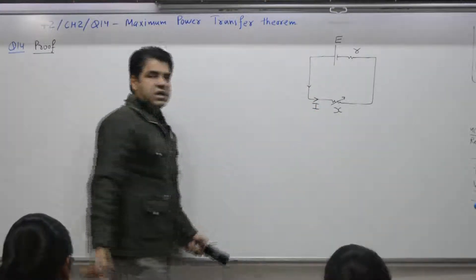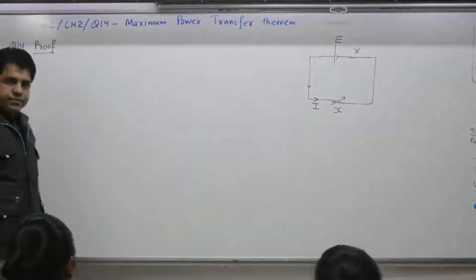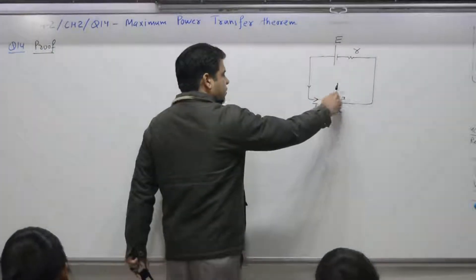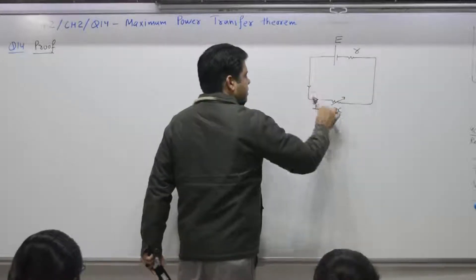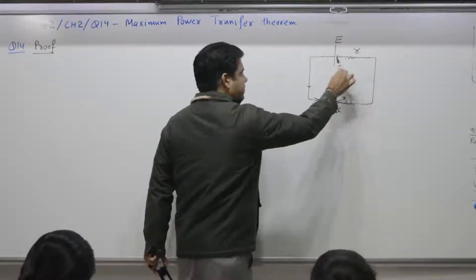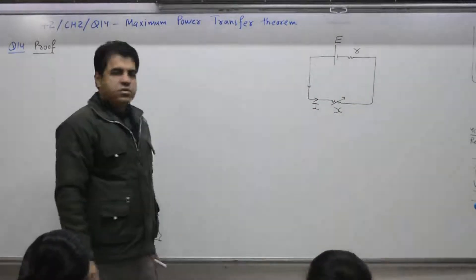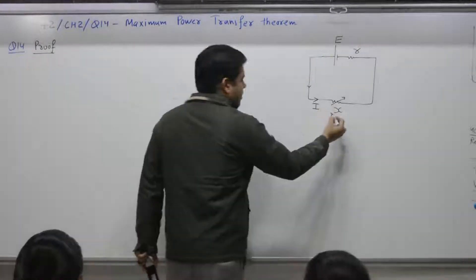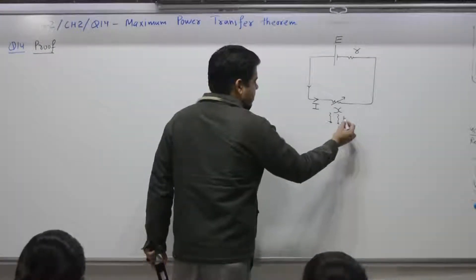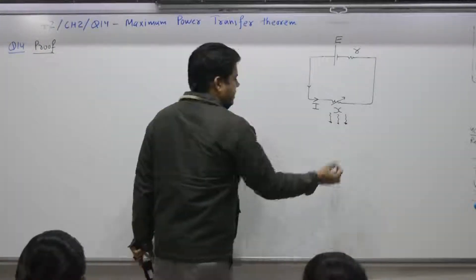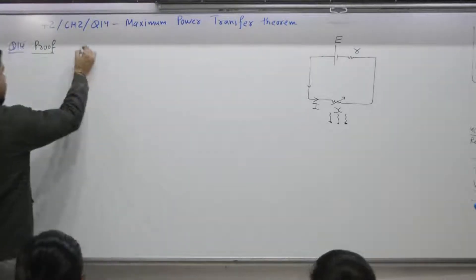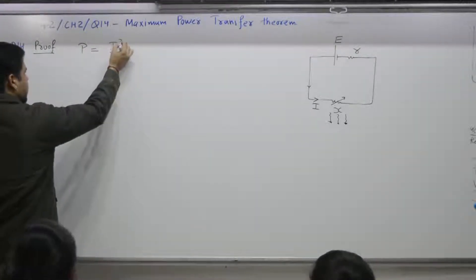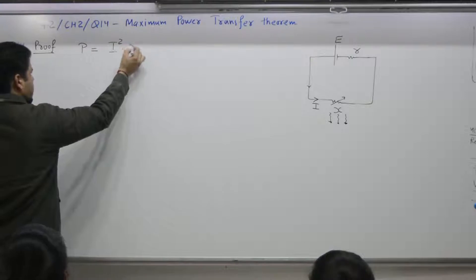Let the current flowing in the circuit be I. When you vary the value of X, the total resistance in the circuit will change, so I will also change. Power across X is I squared into X.